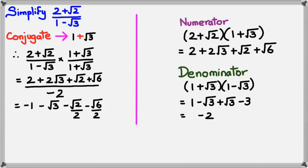Alright guys, just remember that when you want to rationalize and you have a number and a surd in the denominator, you have to multiply by its conjugate. Hope you got the idea of conjugate surds. That's about it for the session — thanks for watching.